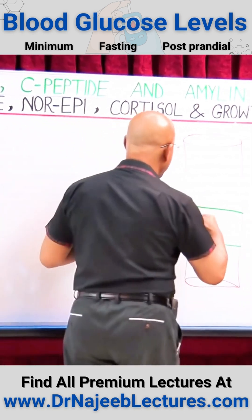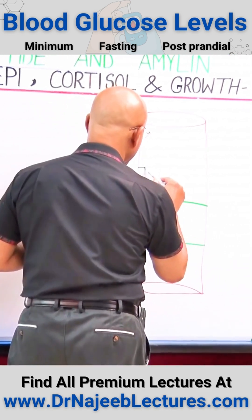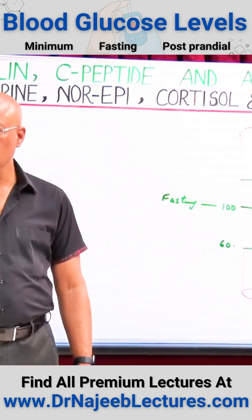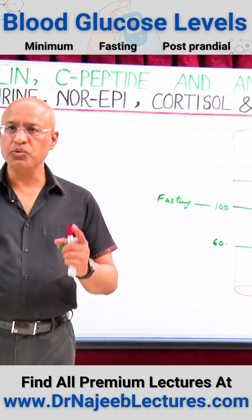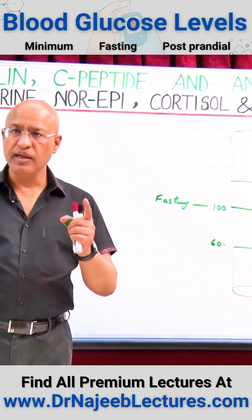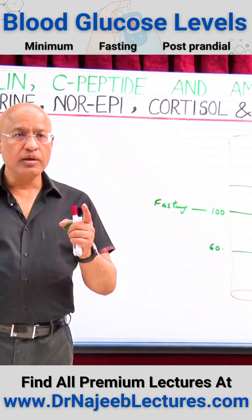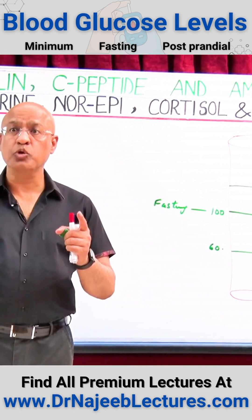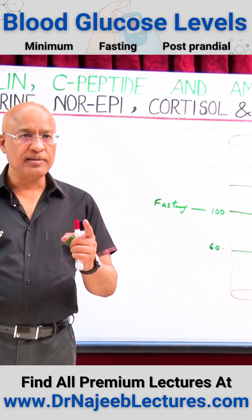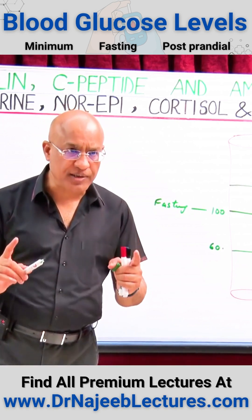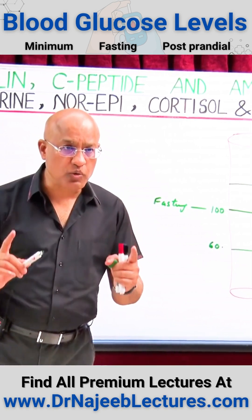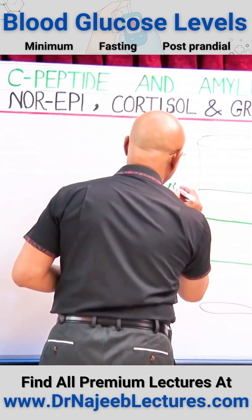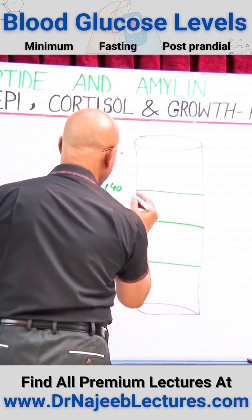It is very important to know that within two hours of taking food, the glucose level controlling mechanisms should be so strong that blood glucose level post-prandially — after two hours — should not be more than 140 milligrams per dL.